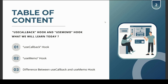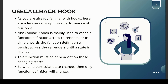Let's see the useCallback hook first. As you're already familiar with hooks, there are a few more hooks to optimize the performance of our code. The useCallback hook is mainly used to cache a function definition across re-renders. In simple words, a function definition will persist across re-renders until a state it depends on is changed. When a particular state changes, only then will the function definition change.